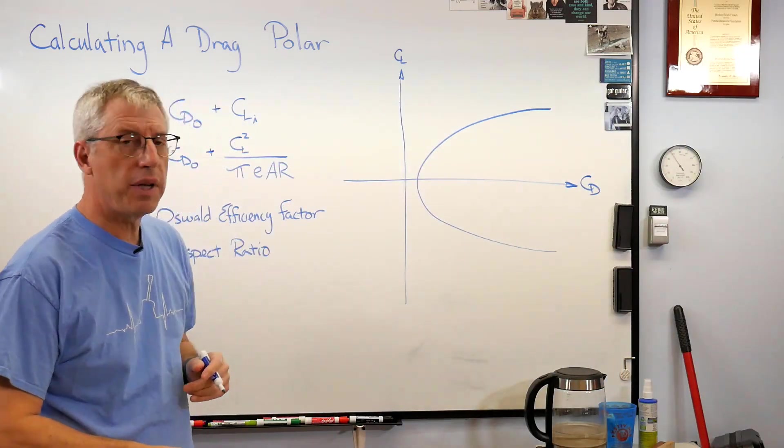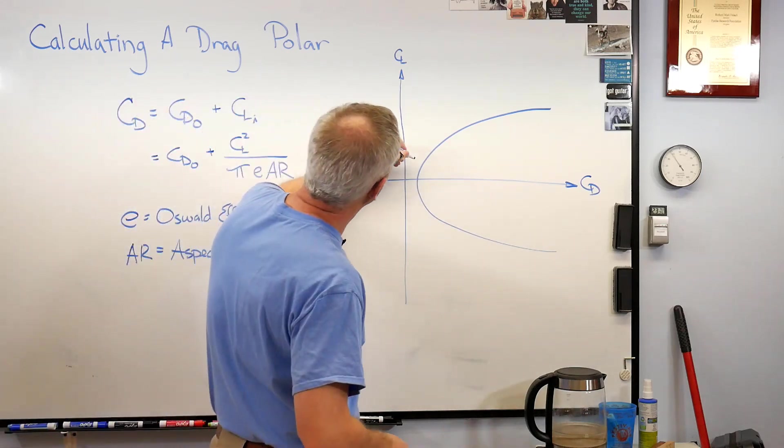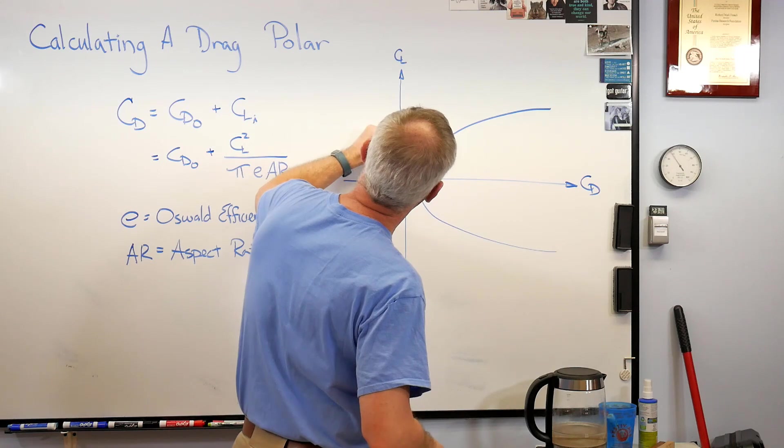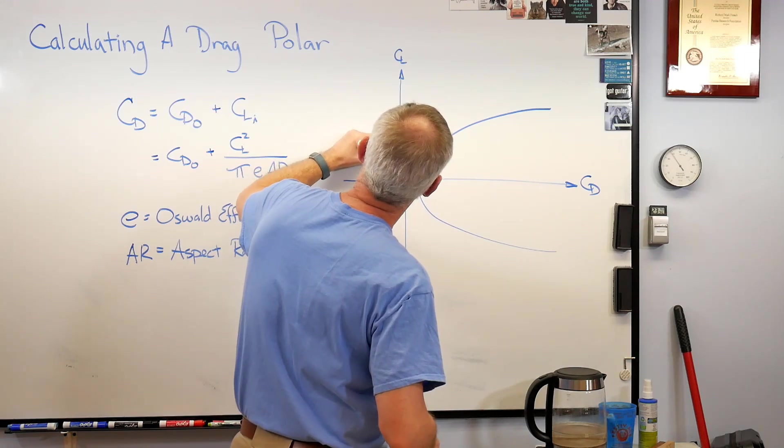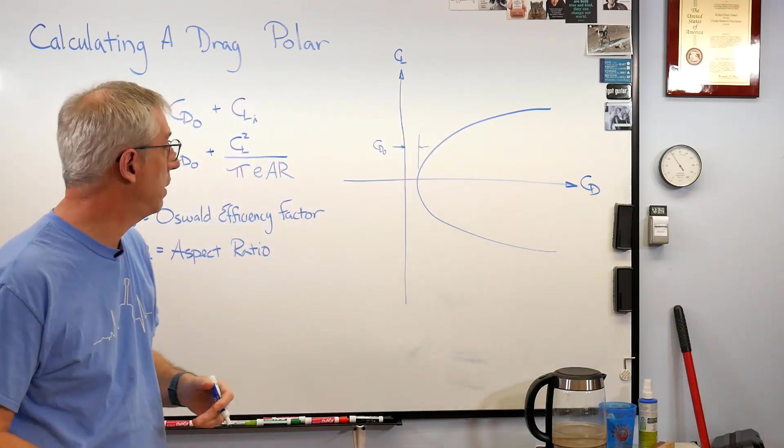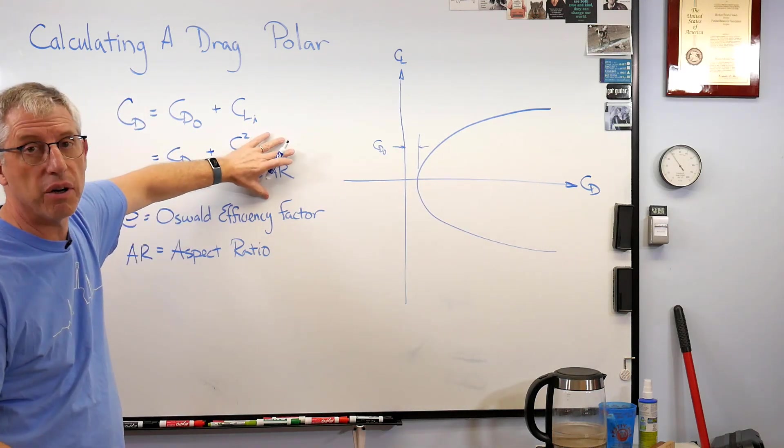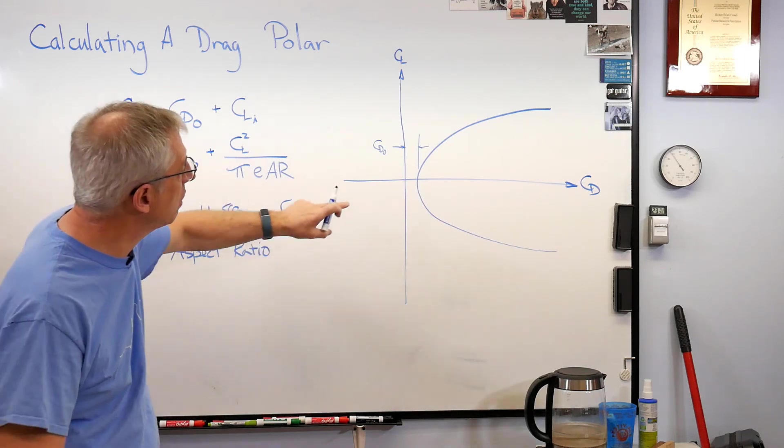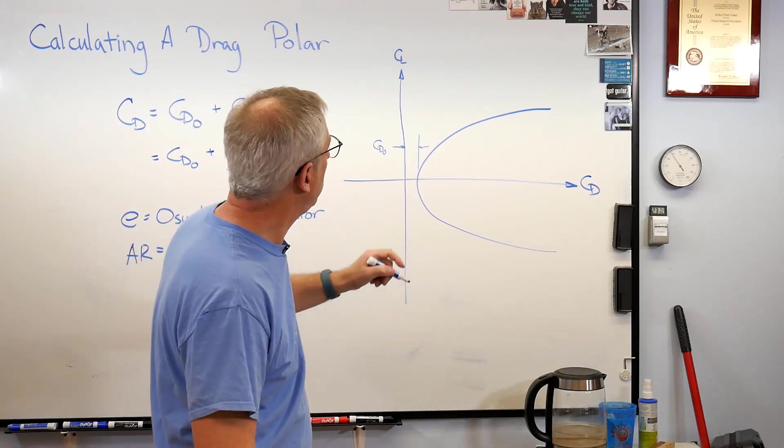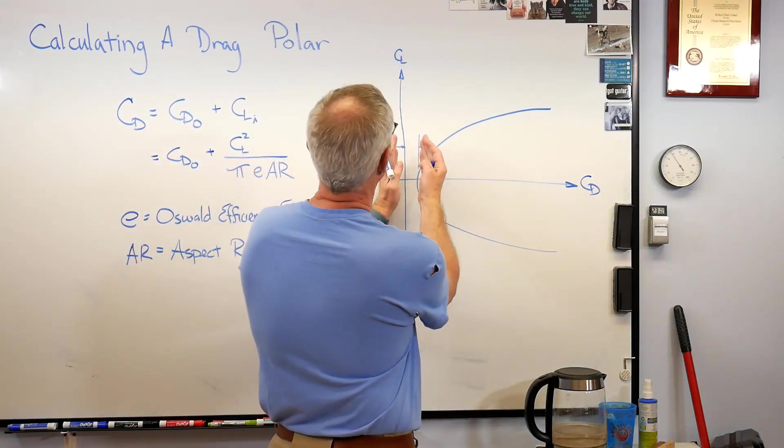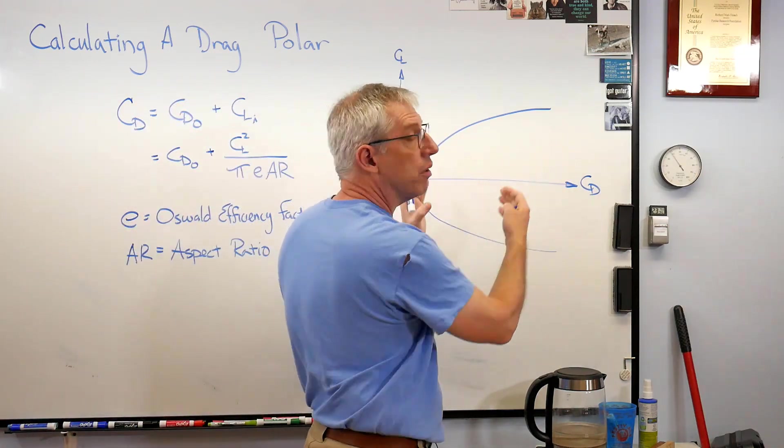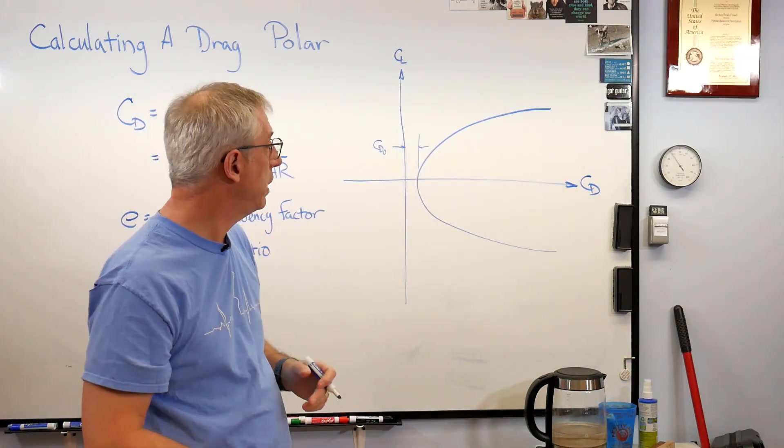This distance right here, that's CD zero. You can't get any lower than that because even if this were zero—it's not, but let's say it was—you're still stuck with that. There's just nothing you can do to get away from that. This part of the curve is due to form drag and this part of the curve is drag due to lift.